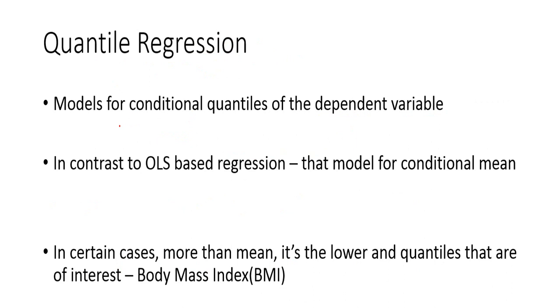So quantile regression is a kind of model which models the conditional quantiles of the dependent variable. So how is it different from the ordinary least square based regression model? The ordinary least square based regression model models for the conditional mean.